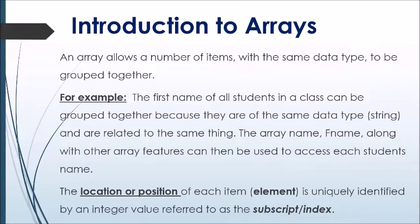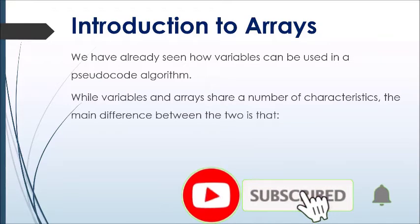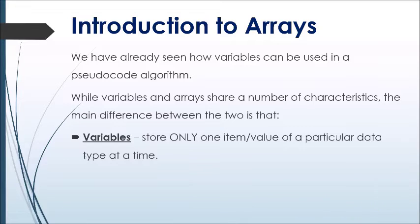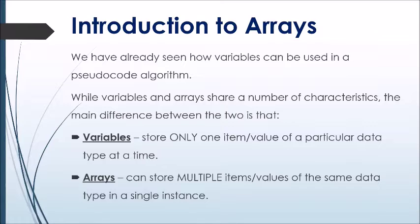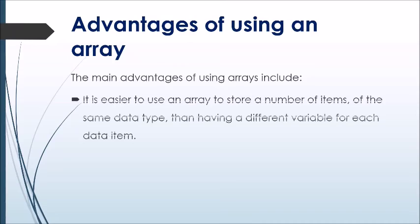We have already discussed how variables can be used in a pseudo code algorithm. While variables and arrays share a number of characteristics, the main difference is that variables store only one item or value of a particular data type at a time, whereas arrays can store multiple items or values of the same data type in a single instance.